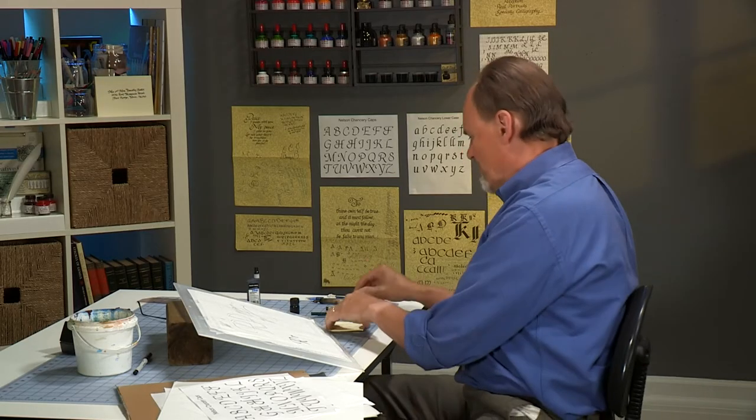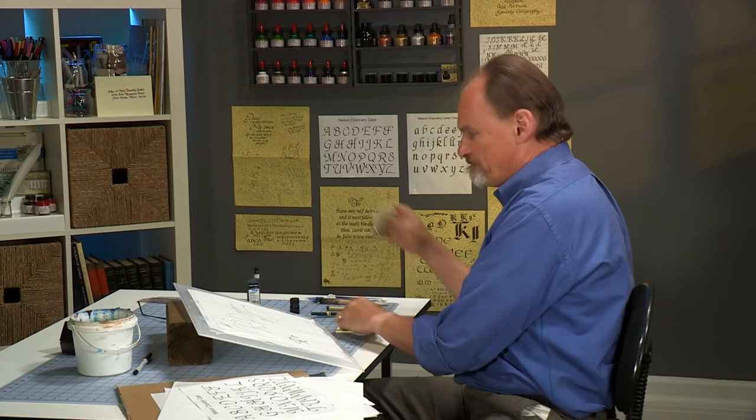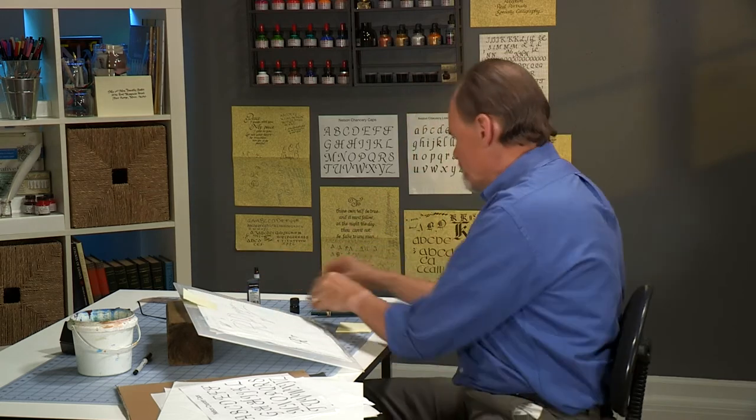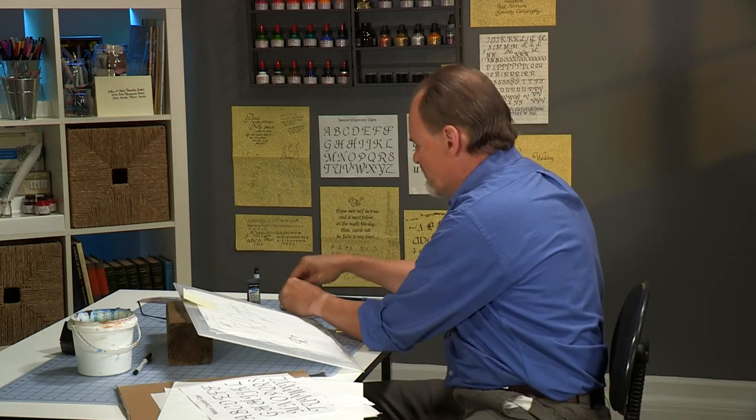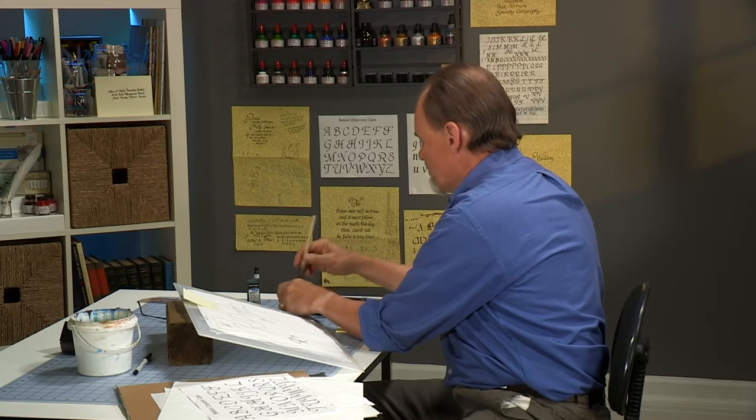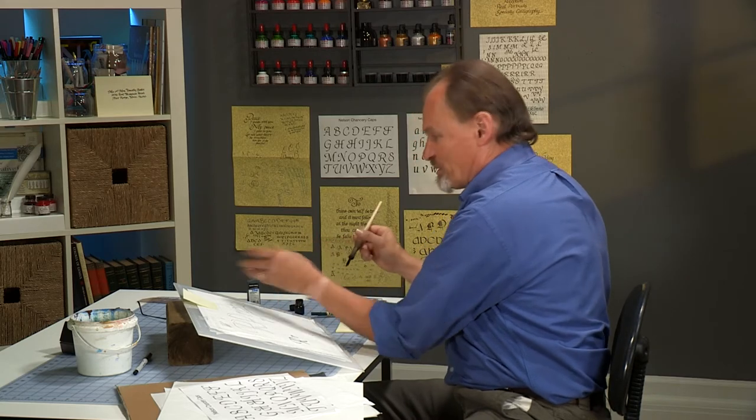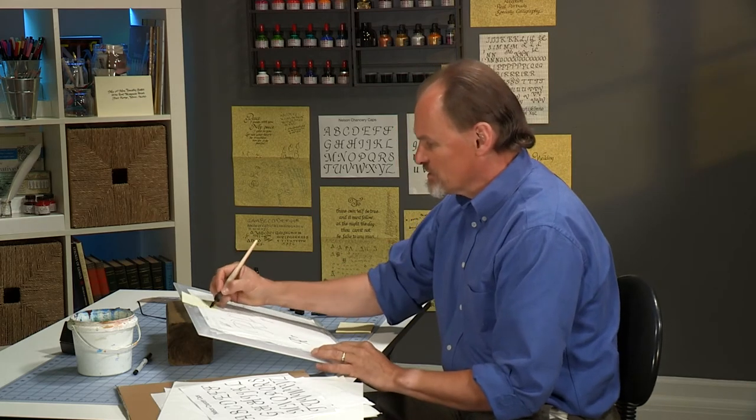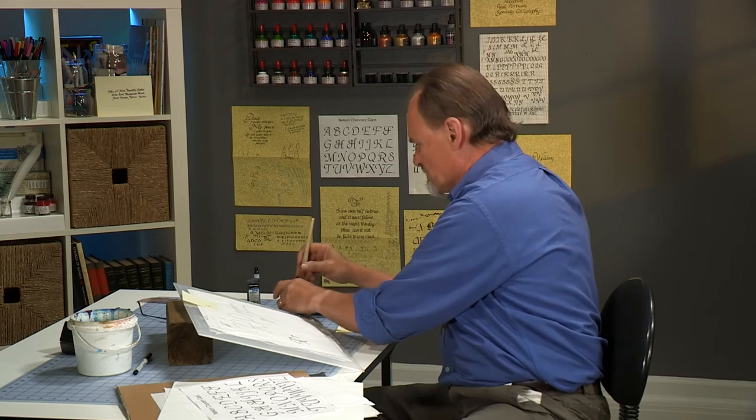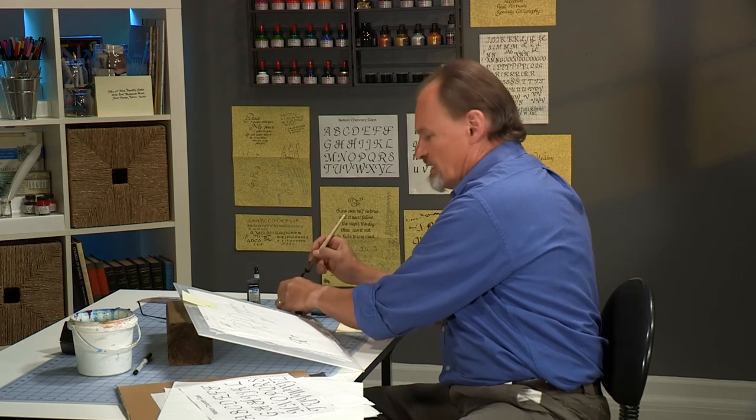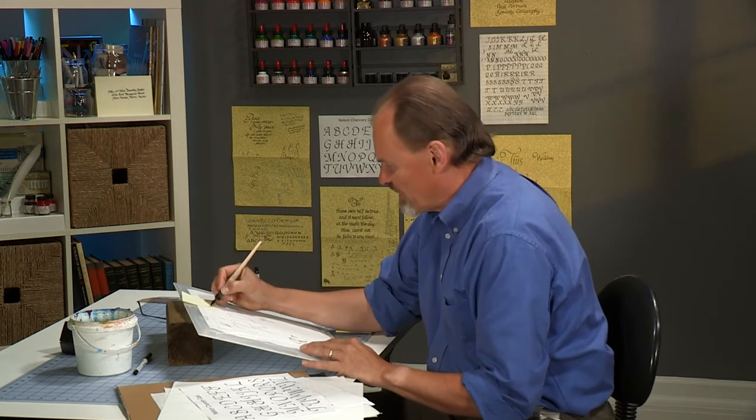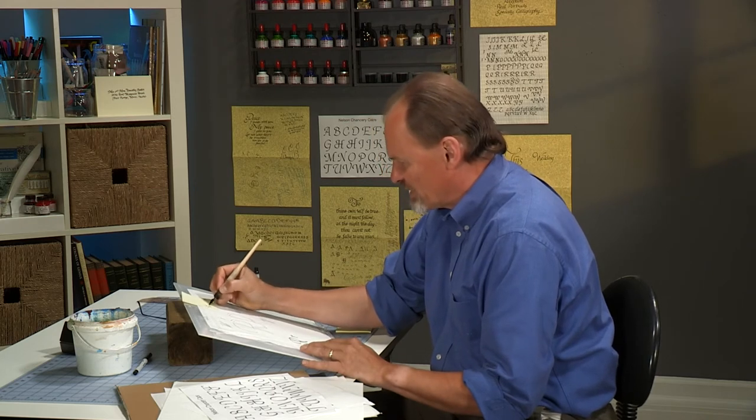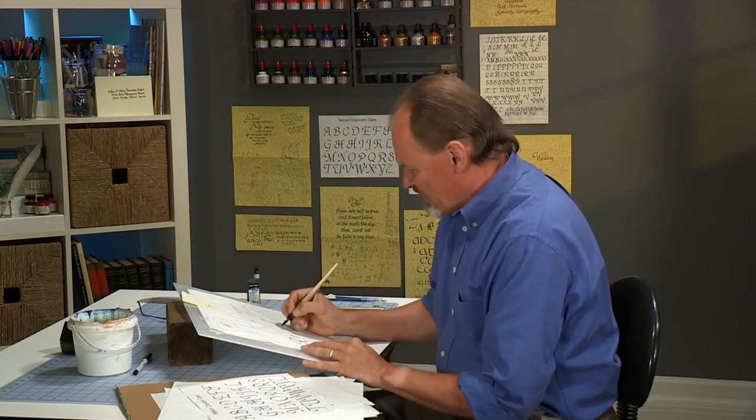Now let's progress to the dip pen, getting a piece of paper out so that I can make sure my pen is behaving itself. When I'm doing calligraphy at home or in my studio, I do use sticky notes. They're just so convenient. You could use any piece of scrap paper, but I find this works best for me.